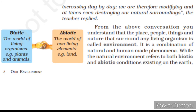As we know, environment is a combination of natural and human-made phenomena. So on this basis, environment is divided into two types: the first is biotic environment and the second is abiotic environment. All living organisms belong to biotic environment — for example, plants and all the animals.